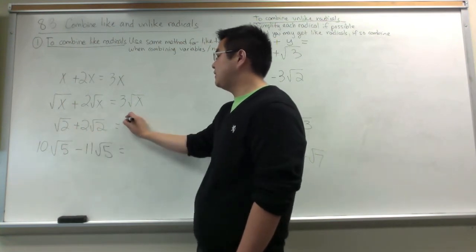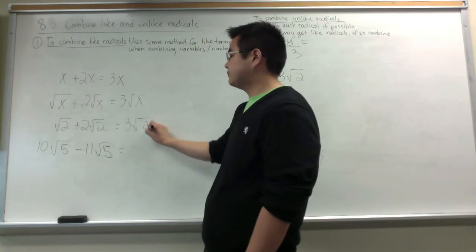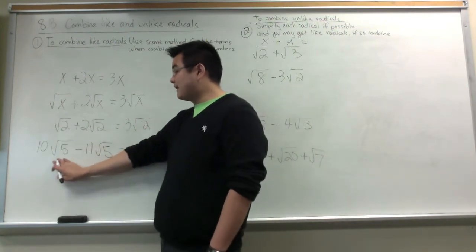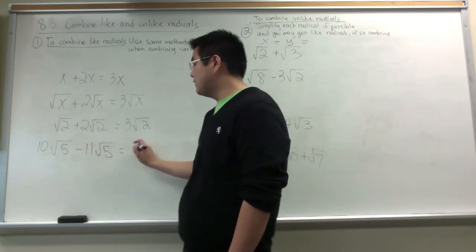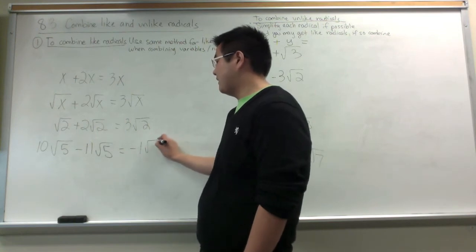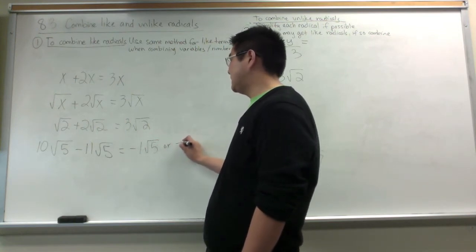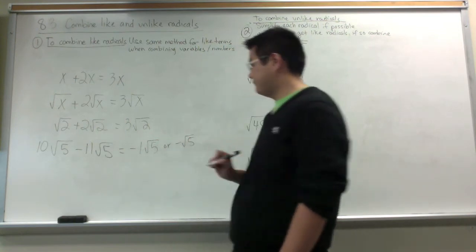So root 2 plus 2 root 2 would be 3 root 2. And then 10 root 5 minus 11 root 5 would be negative 1 root 5, or you can write it as negative root 5.